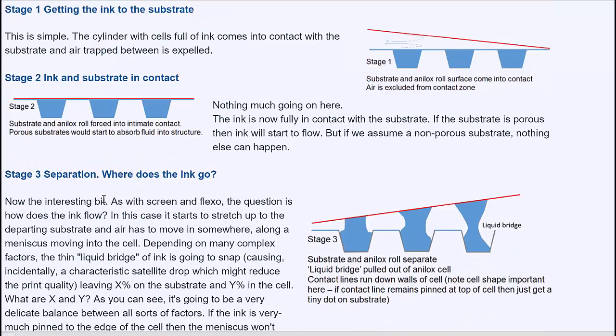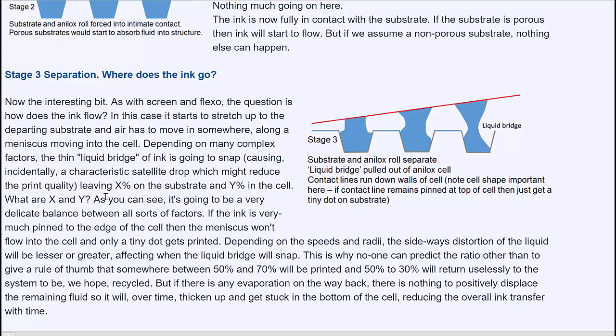Now let's get to the really tricky part. The separation. Where does the ink go? We've got the substrate pulling away from the roller and where the ink was touching the substrate then it comes out. The ink which is going up there has to be replaced by air somewhere else. The air starts going into the cell as the ink is pulled out. As it separates more...